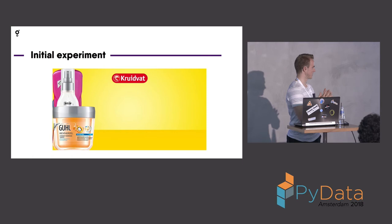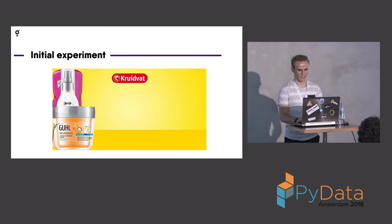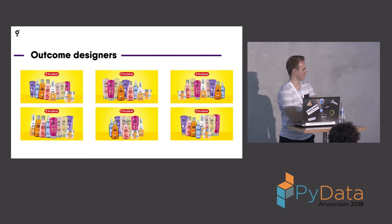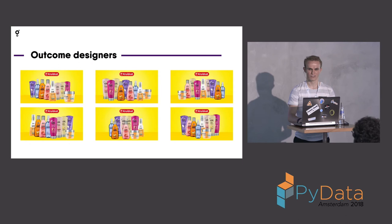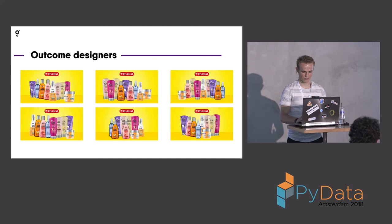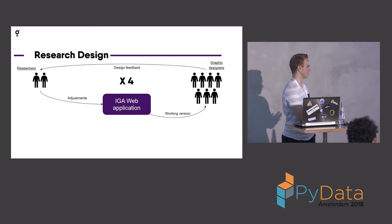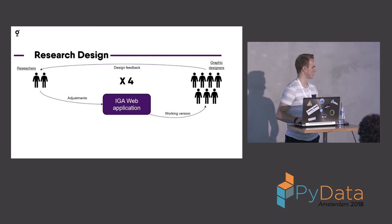We did an initial experiment with designers. They got these components in the Kruidvat canvas and needed to make a composition. The outcome was that they all created a different one. So there's not actually one solution to this problem — there's not one composition that actually satisfies all designers. So we came up with a research design that makes use of an interactive genetic algorithm.